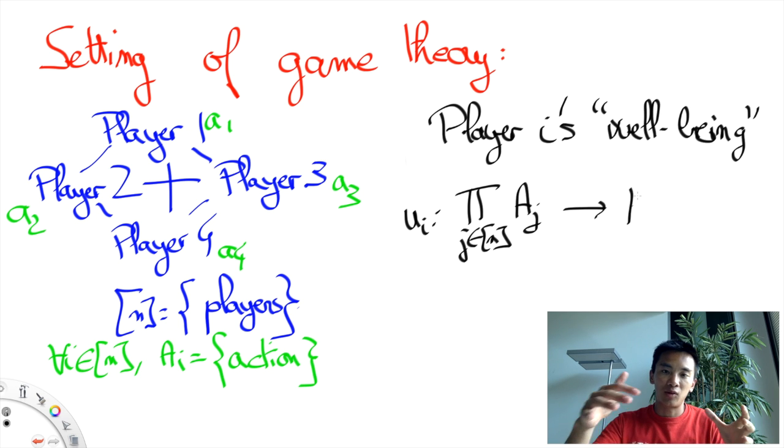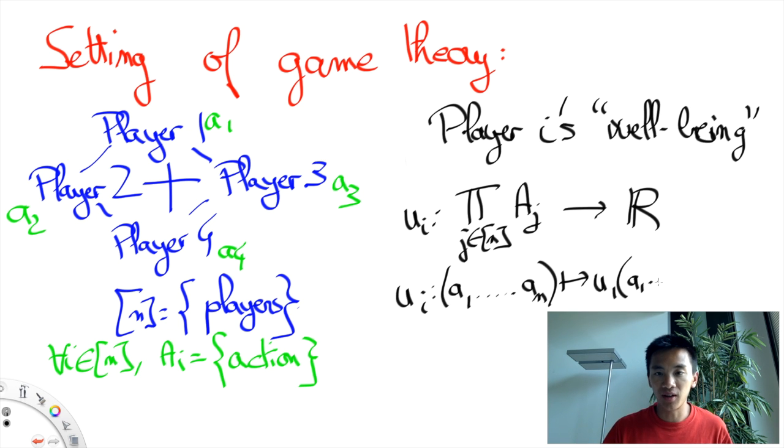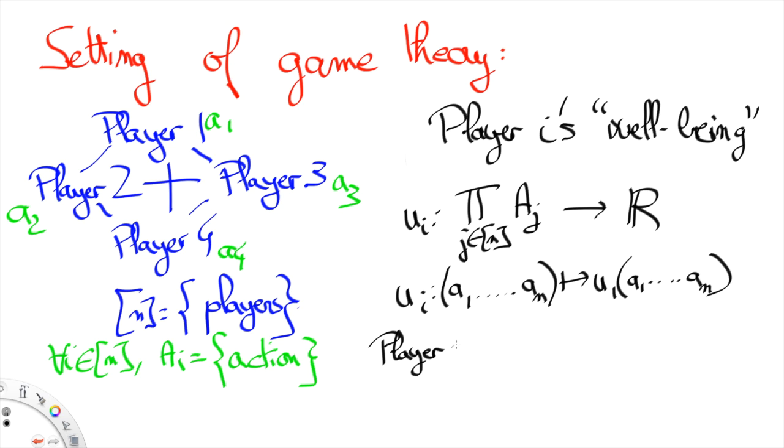More precisely, each player measures its well-being through a utility function that he wants to maximize, and any player's utility is a function that depends on all players' actions. The n-tuple of these utility functions then defines the game.